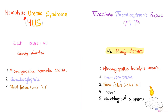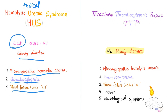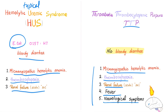Comparing typical HUS and TTP: typical HUS presents with the triad — microangiopathic hemolytic anemia, thrombocytopenia, and acute renal failure — plus E. coli O157:H7 and blood in the stool. TTP is a pentad: microangiopathic hemolytic anemia, thrombocytopenia, renal failure, plus fever and neurological symptoms — usually altered mental status. There is no bloody diarrhea in TTP, and renal failure is not very common in TTP.